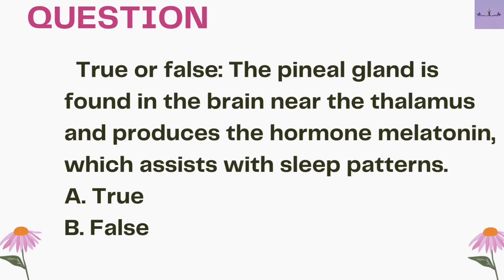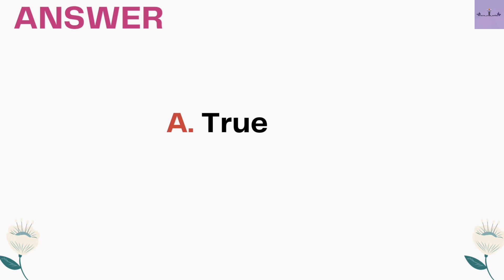Next question, true or false: the pineal gland is found in the brain near the thalamus and produces the hormone melatonin which assists with sleep patterns. The pineal gland is a pea-shaped organ present in the brain and it produces melatonin, which is responsible for the sleep pattern — also called the circadian rhythm, our biological clock. So the answer is option A, true.